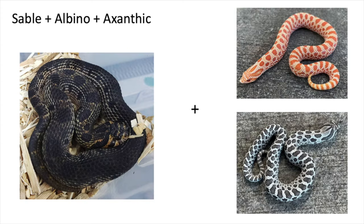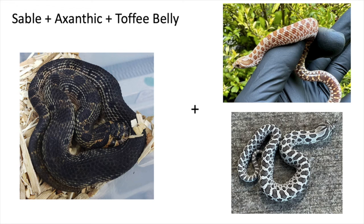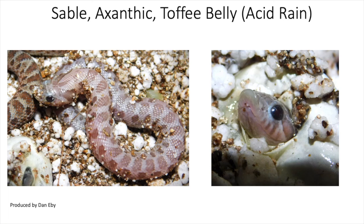Now let's get into some three-recessive combinations involving sable. The first is sable combined with albino and xanthic, which gives you the snow burst — first produced by Dan Eby, which I covered in my last video. Next, combining sable, xanthic, and toffee belly gives you a combination called the acid rain, also produced by Dan Eby and produced this year. It's a very unique-looking snake with an almost pinkish-purplish appearance, and it will be interesting to see how it develops after a few sheds.